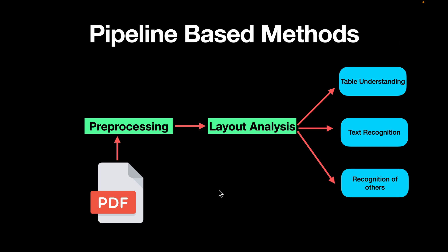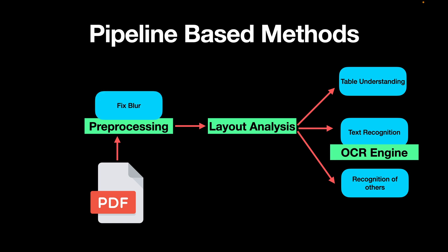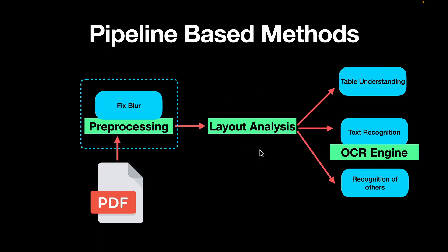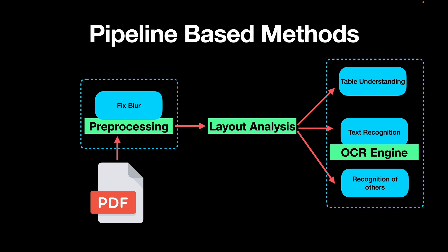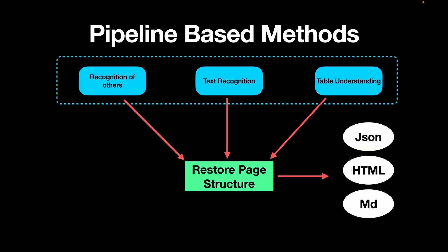That leads to pipeline-based methods. Pipeline-based methods break down the PDF parsing task as a series of steps. For example, the first step could be to fix blur or orientation of the page, the second could be layout analysis to figure out where tables or text are in the document and recognize figures or plots. Layout analysis also determines whether a page is double-columned or single-columned — for example, academic papers have a double column. After these steps, we do a restoration of the page structure, extracting tables, text, and images and converting them into a structured format such as JSON, HTML, or Markdown.